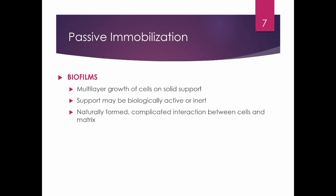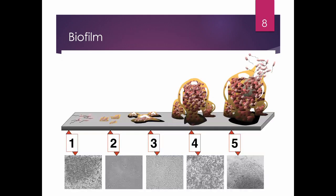For passive immobilization, you have biofilms. Active versus passive: in active immobilization, you are the one encouraging immobilization of the cells. For biofilms, the cells themselves produce the matrix and they are naturally formed. Biofilms are multi-layered growth of cells on a solid support. They can be biologically active or inert, and are formed naturally by the interaction between the cells and the matrix.